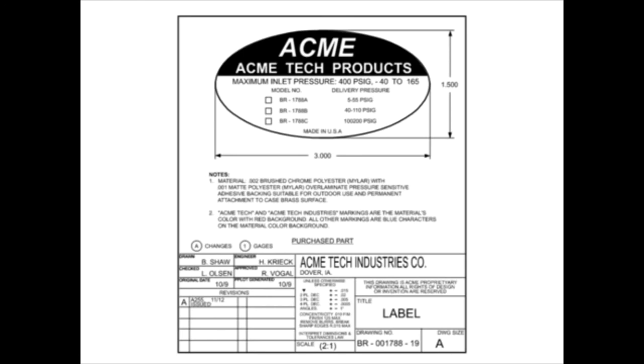These characteristics are typically called the form, fit, and function of the part. It's up to the manufacturer to develop detail, machine, or casting drawings that conform to the purchase part drawing requirements.